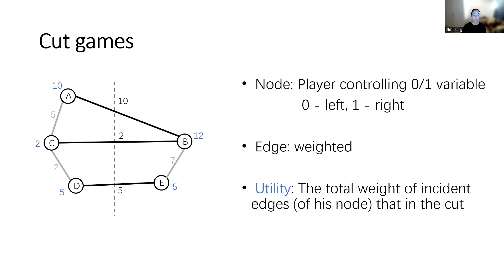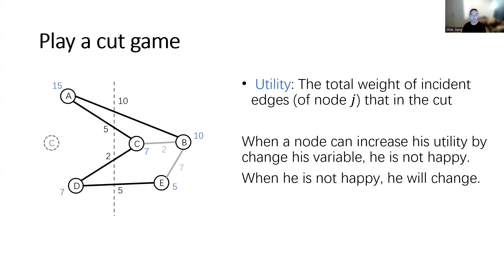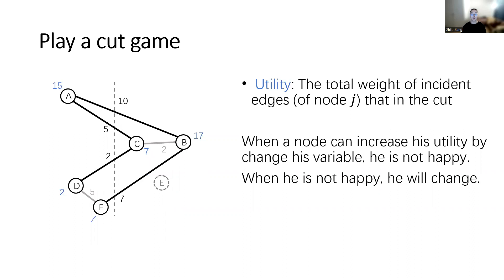You may notice that this state is not a good state for cut games, because some nodes can change their strategies and increase their utilities. For example, node C — we call such a node an 'unhappy node.' When a node is unhappy, it will try to do something to increase its utility, which in cut games simply means jumping to the other side. Here, C notices it can increase its utility from 2 to 7 by jumping to the right side. Then we find the next node who can improve is node E, and he does so.